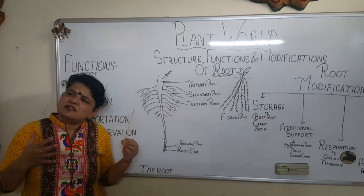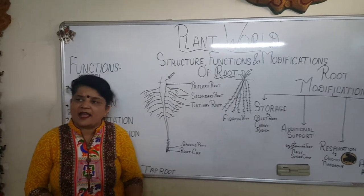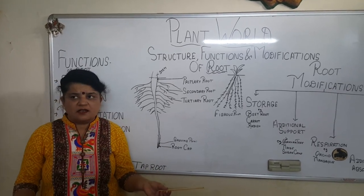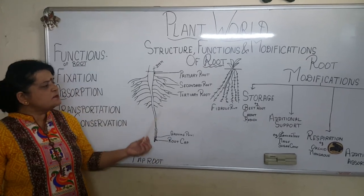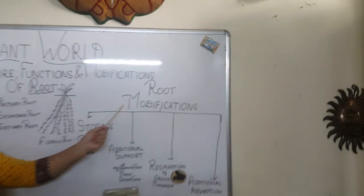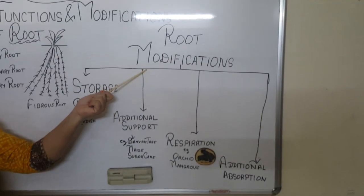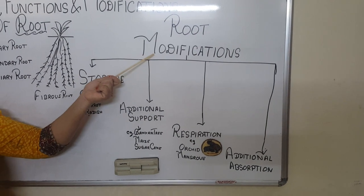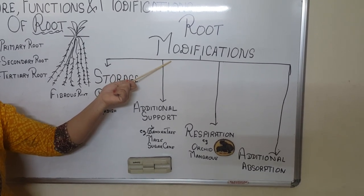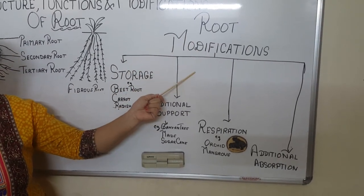It is not necessary that all roots should be under the soil only. In most plants the roots are underground, but in some plants the roots are aerial — above the soil as well. At times roots also store food. These are called root modifications — when a root performs some extra or additional functions apart from fixation, absorption of water and minerals, and soil conservation.